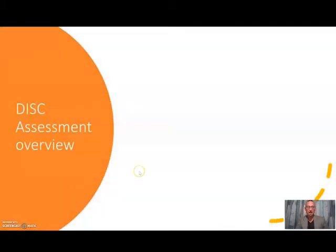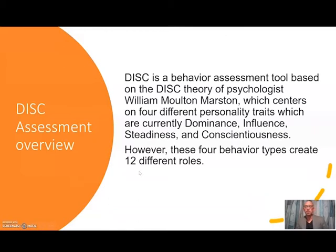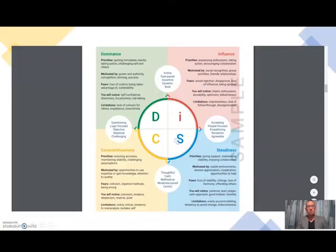And the DISC assessment is a behavioral assessment tool. That means it's not necessarily a personality test, like many personality tests you might have seen in the past. This is more about behavior and how people usually behave. And after taking this assessment, you'll find that you are probably either a D for dominance, an I for influence, an S for steadiness, or a C for conscientiousness. Or you might be some mix of some of these.